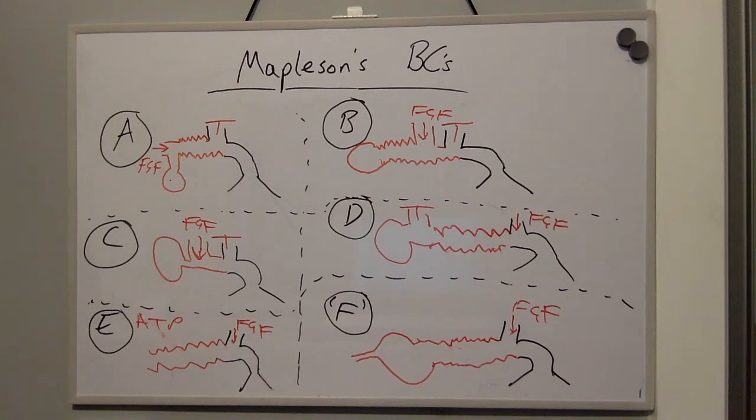The coaxial version of Mapleson breathing circuit D is known as the Bain system.